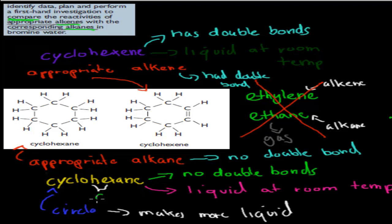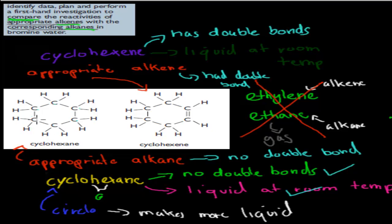And the 'ane' part refers to it being an alkane, so it has no double bonds. And it is liquid at room temperature, which is good because we want to put it into bromine water. So that was cyclohexane. This is the structure of cyclohexane — you can see six carbons, and between the carbons there are no double bonds.